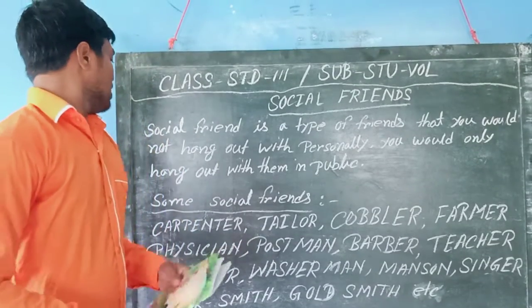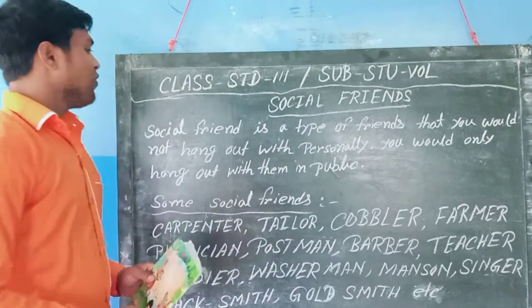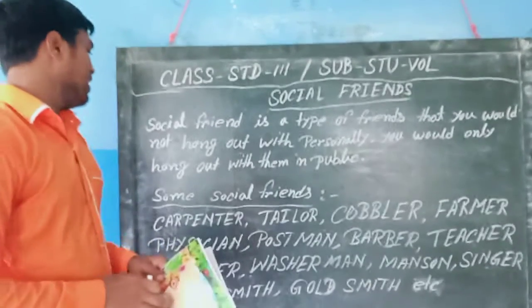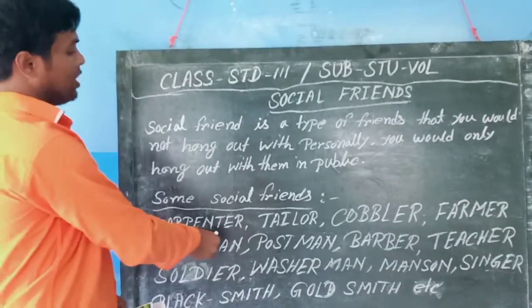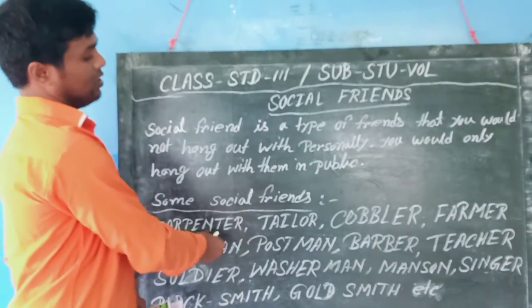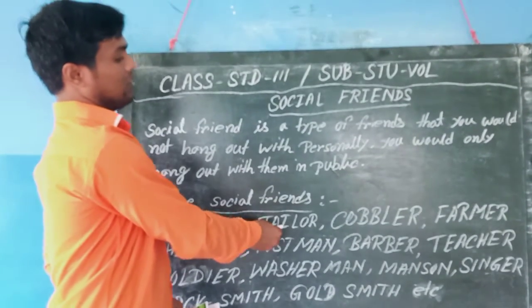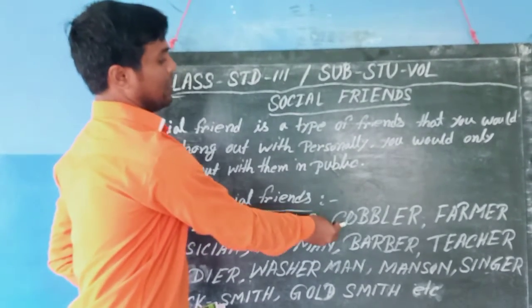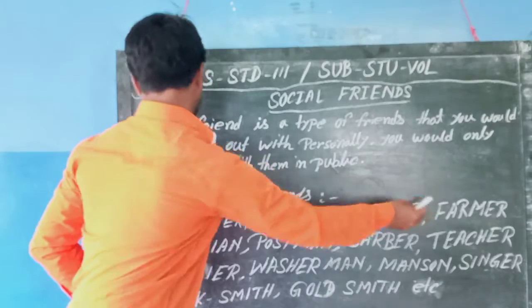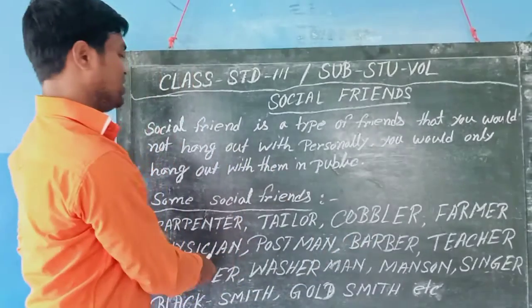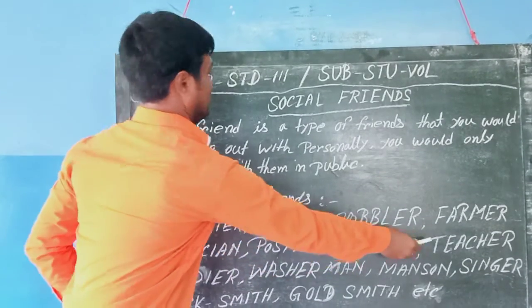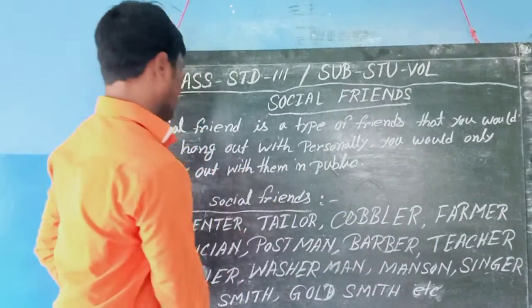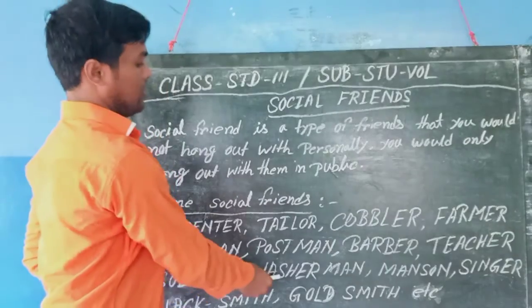Some important Social Friends: Carpenter, Teller, Farmer, Postman, Barber, Teacher, Soldier.